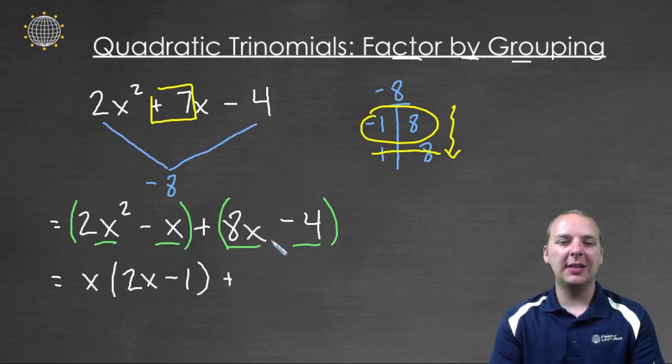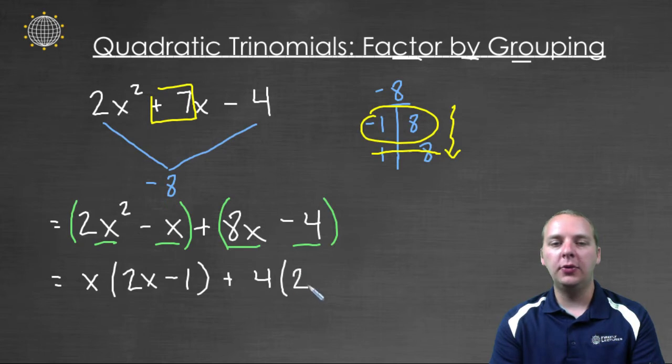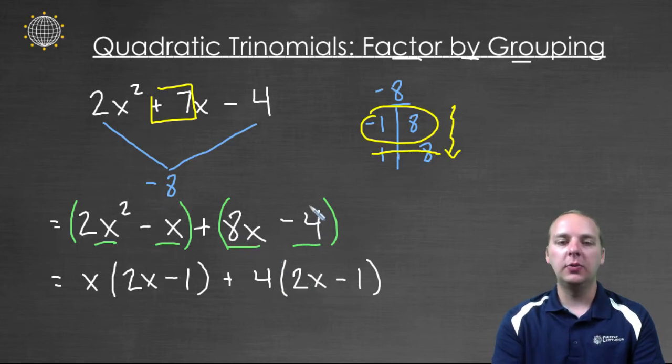And in the second group it looks like I have a common factor of 4, so I'll pull a 4 out, and then left over we'll have a 2x - 1, also 4 times 2x is 8x, 4 times 1 gives me 4.